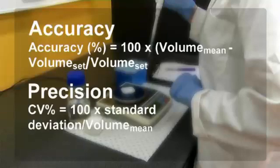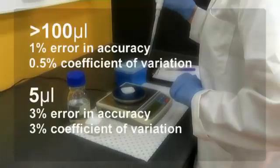After doing this you can calculate the percentage accuracy and the coefficient of variation for each set volume. You should expect less than 1% error in accuracy at the higher volumes, that is volumes greater than 100 µL, with a coefficient of variation of less than 0.5%. At about 5 µL accuracy will drop to about 3% and the coefficient of variation to about 3% also.